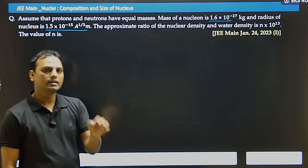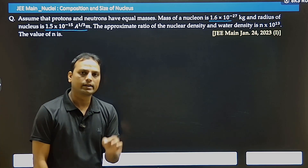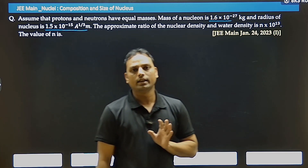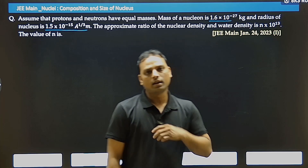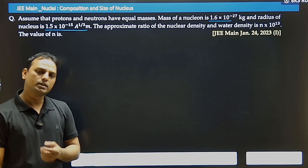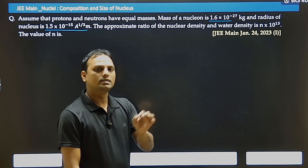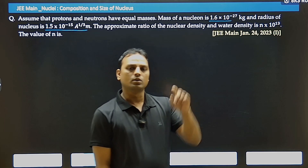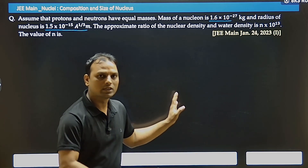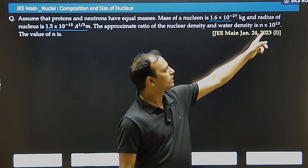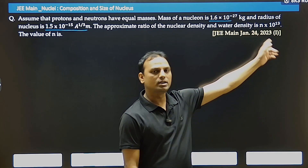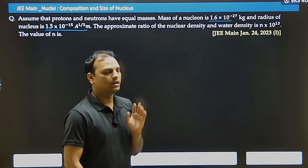We need to find the ratio of nucleus density to water density. First, calculate the nucleus density. Then, water density — we know it is 10³ kg per meter cube. We divide the nuclear density by that. The answer is in the form N×10¹³, and we need to find the value of N.